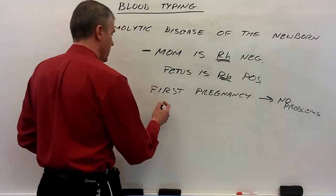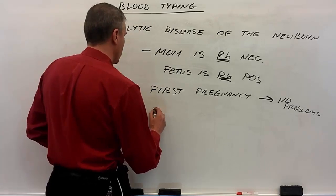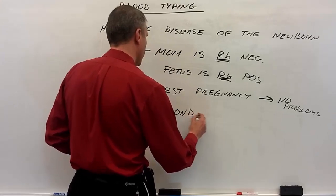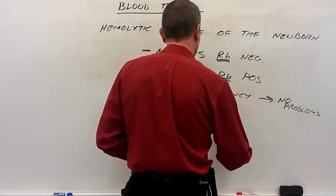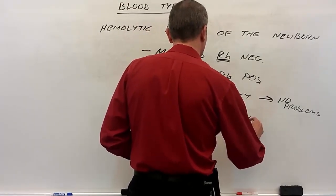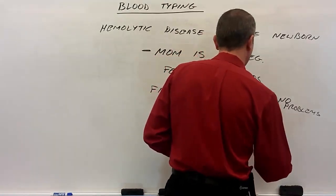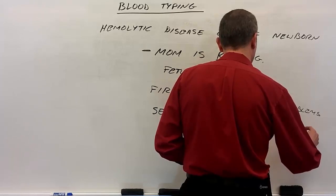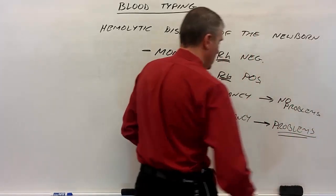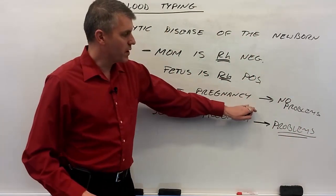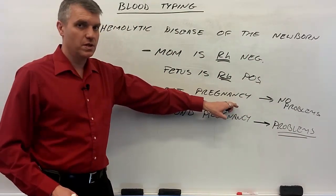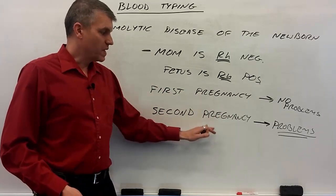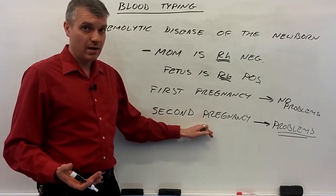Again, it usually doesn't affect the first pregnancy. But if the mom gets pregnant again with an Rh positive baby, that's more often the one that has problems, because the first pregnancy immunized mom against Rh, and she now makes antibodies against Rh. Those antibodies can cross the placental barrier.